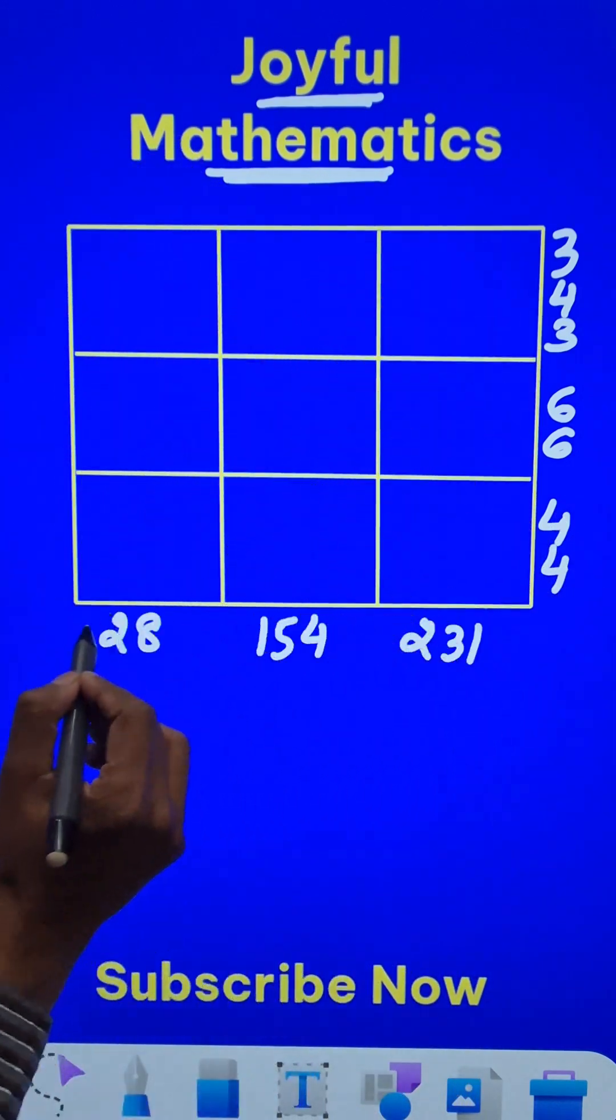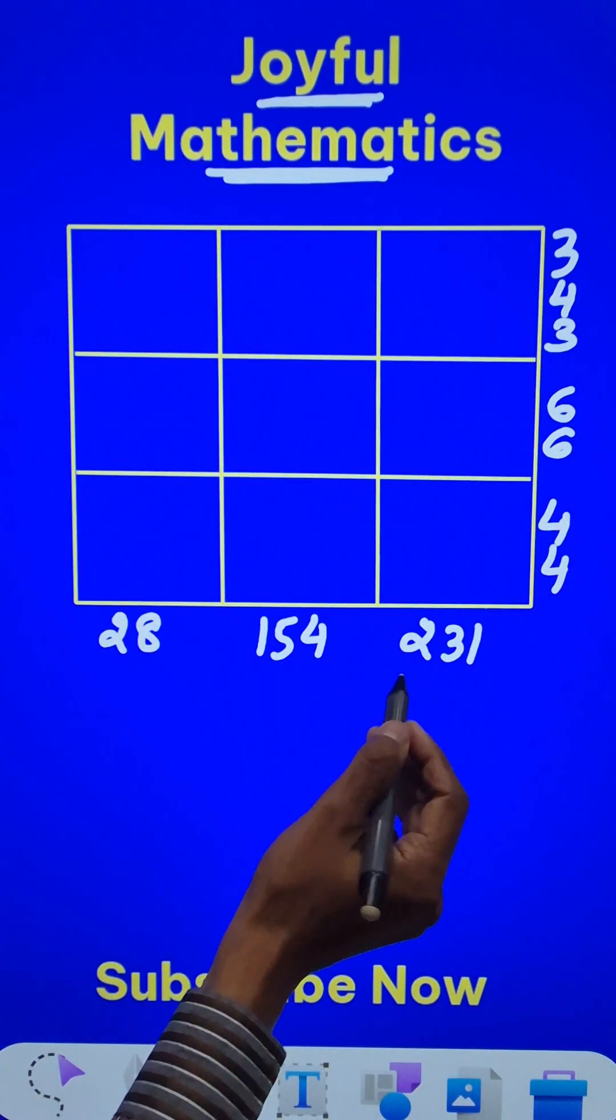And likewise, multiply column wise, you get 28, 154 and 231. How do you solve this puzzle now?